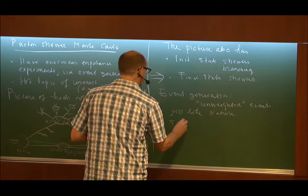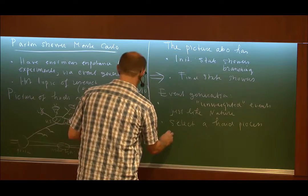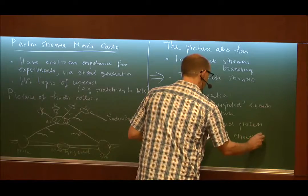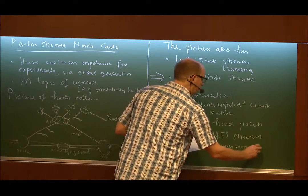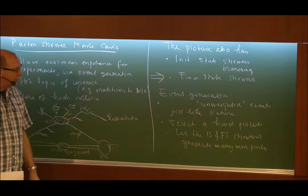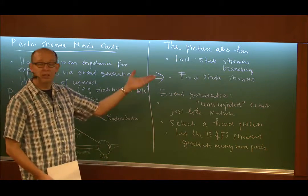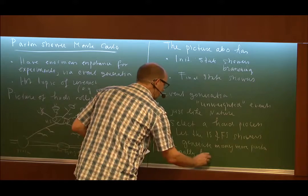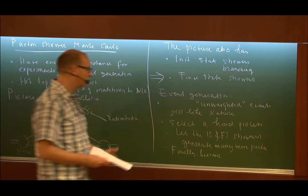Nature does not weight its events either. It just makes some events more frequently than others. But there is no different weight per event. So event generation has unweighted events, just like nature. Typically, you select, when you run, when you use some of these programs, select a hard process. You decide to do a simulation for tt-bar production. And then let the initial state and final state shower routines generate many more partons. So if you do tt-bar production, you keep on running the code. Every time you have an event, you can have tt-bar plus 4 partons, the next event tt-bar plus 17 partons. That is not a fixed number. Unlike in analytical calculation, where you defined it. And then finally, hadronize.